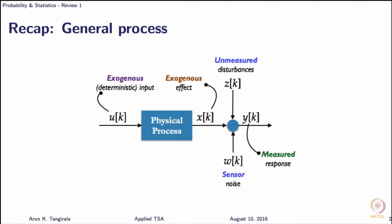What you see on your screen is a schematic of a general process - I have spoken about this in the last lecture. Any process that you would encounter more or less can be represented in this way. The main assumption is that whatever effects of unmeasured disturbances and the effects of sensor noise you have are going to add on to the response of the so-called physical process.